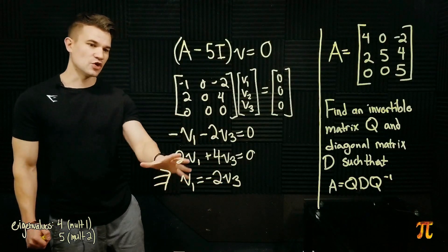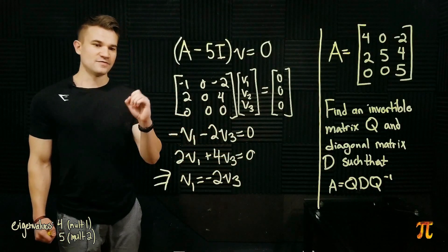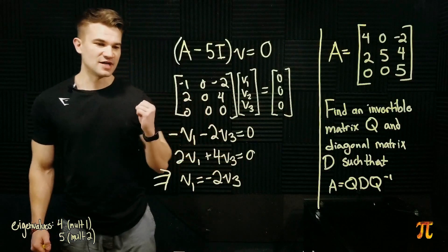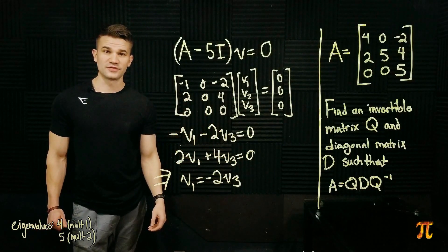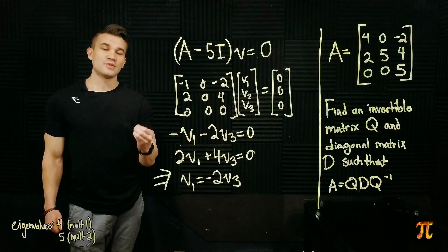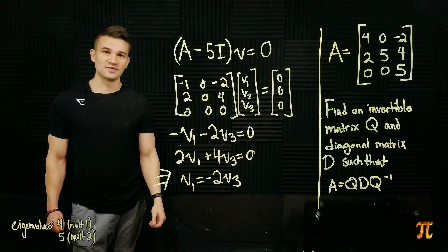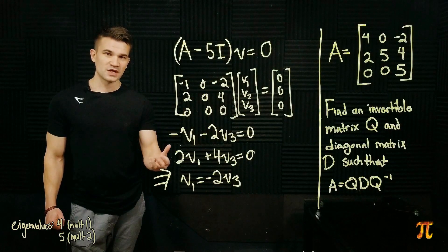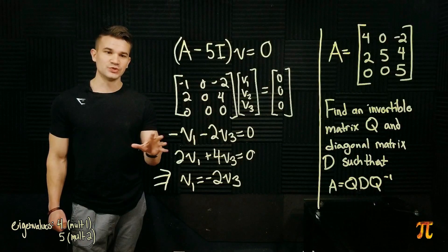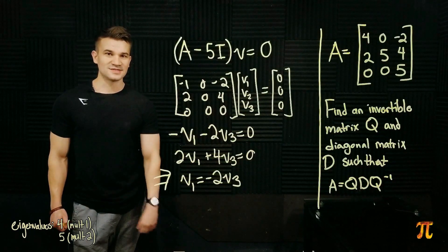So, V2 is not involved in these restrictions at all, so it is a completely free variable. And V1 is determined by V3, so V3 is another free variable. Since we have two free variables, that tells us that we can pick two linearly independent eigenvectors corresponding to 5. The eigenspace of the eigenvalue 5 is two-dimensional, because there are two free variables. So, let's pick some eigenvectors.